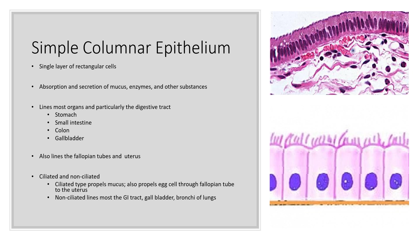There are two types of simple columnar epithelium: ciliated and non-ciliated. The ciliated type basically propels mucus, and in the case of the female reproductive system, it propels the egg through the fallopian tube and into the uterus. The non-ciliated type lines most of the GI tract, as well as the gallbladder and even the bronchi of the lungs.